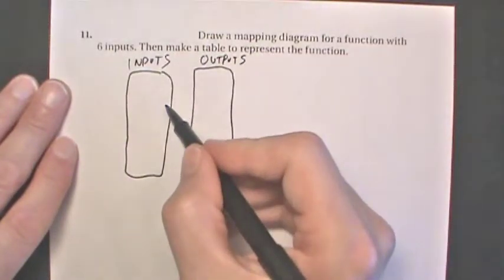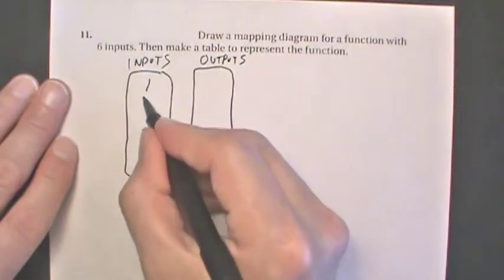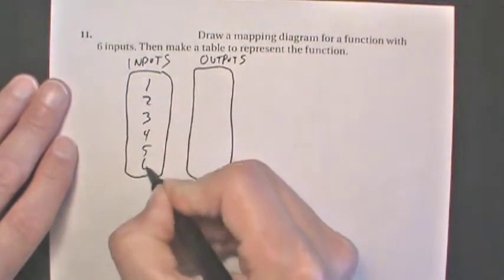We can pick any six inputs. It's a fictional function, so we're just going to pick one, two, three, four, five, and six.